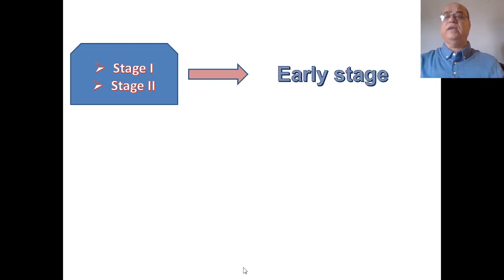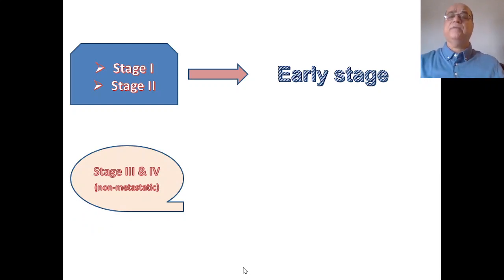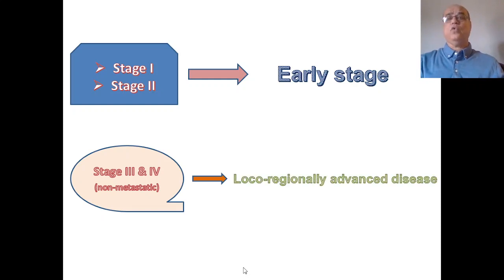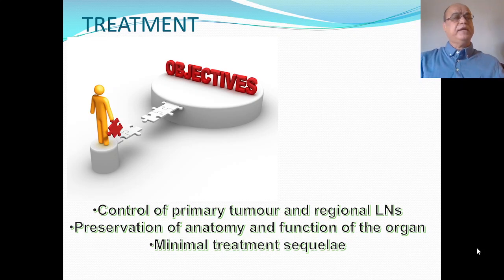Early stage tumors — stage one and stage two — are usually well controlled with a single local modality, either radiotherapy or surgery. Stage three and four tumors that have not metastasized are called loco-regionally advanced disease. For loco-regionally advanced disease, two treatment strategies are used: surgery followed by radiation with or without chemotherapy, or radiotherapy given with chemotherapy.